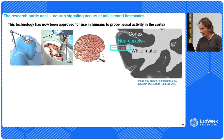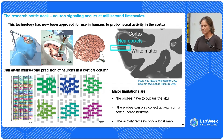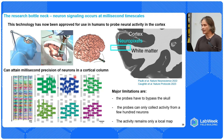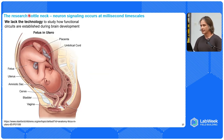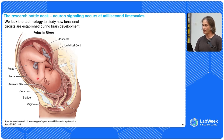Here is a picture of the probe accessing the roughly few millimeters in the cortex. This allows us to attain precision of neurons in a cortical column, but some major limitations are that we have to bypass the skull, the probes can only collect activity from a few hundred neurons, and it remains a very local map of information currently distributed across a larger surface area. We lack the technology to study how functional circuits are established during brain development. It's practically impossible to study functional circuits in the developing human.